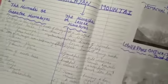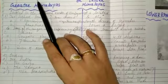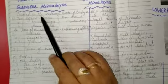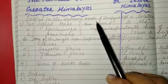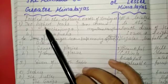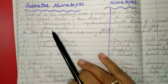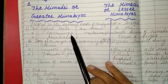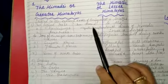So here we will discuss these three ranges of the Himalayas. The first range is the Himadri, or the Greater Himalayas. This range is located in the extreme north of the Himalayas, in the north direction of the Himalayan region. There are two highest peaks of this range: the first is Kanchenjunga and the second is Annapurna. These ranges are mostly covered with snow and are also called snow-covered mountains.